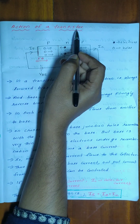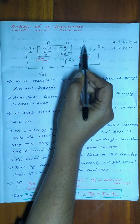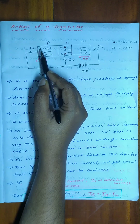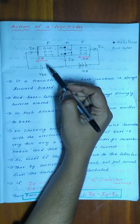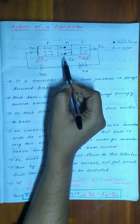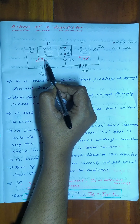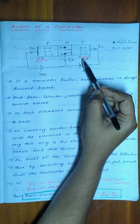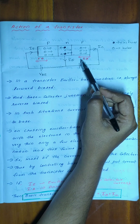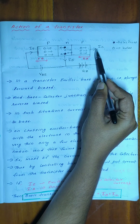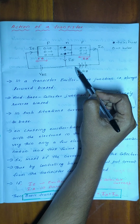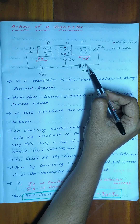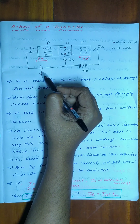Let's talk about the action of a transistor. Here we have a PNP transistor. In P-type we have holes, and N-type is in between. The emitter-base junction is forward biased — we have a positive terminal connected to the battery. The collector-base junction is strongly reverse biased — the positive terminal is on the collector side.